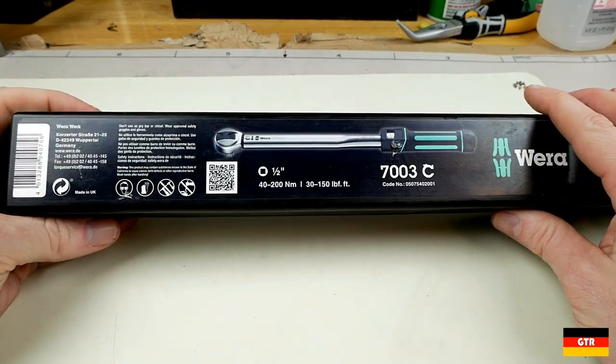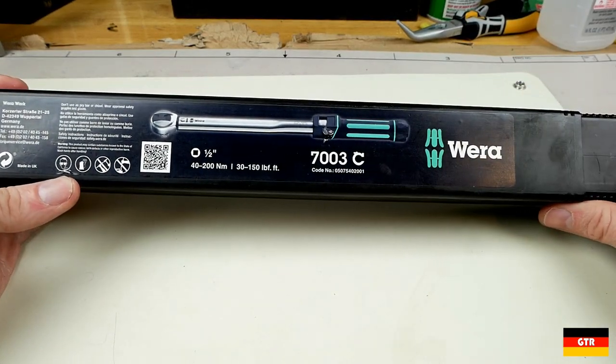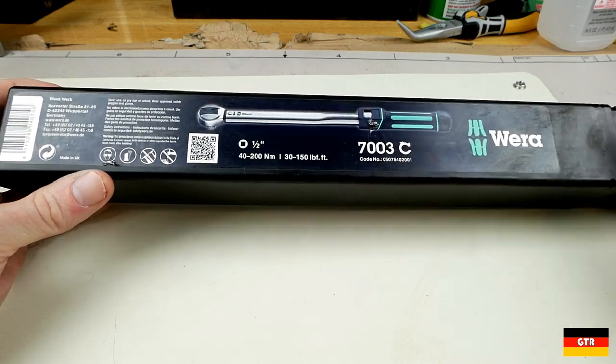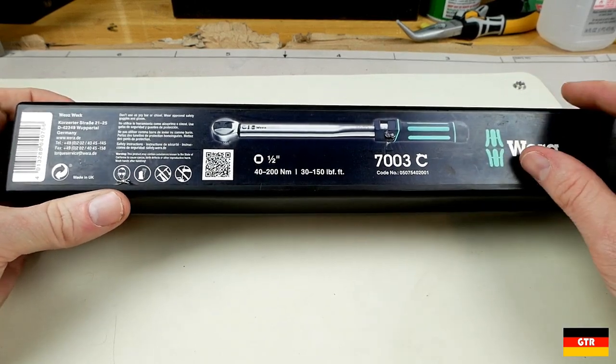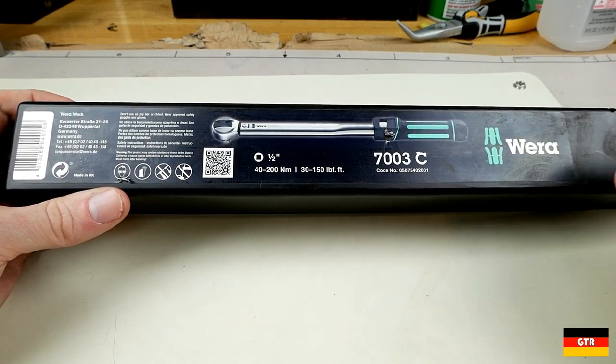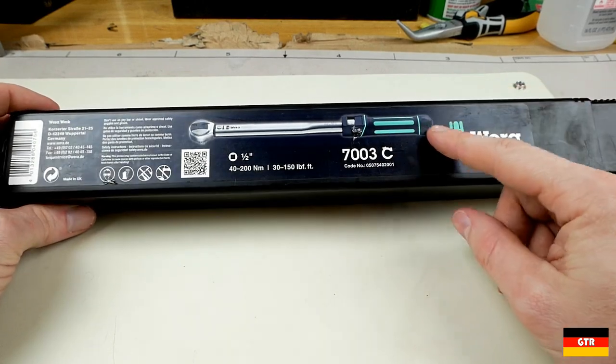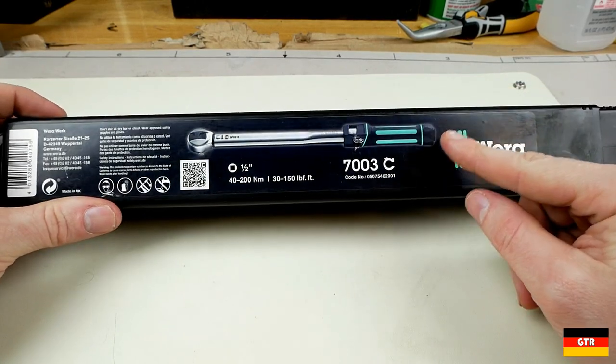So the first thing I want to talk about is this torque wrench. This is the Wera 7003C. This is a rebranded product that's actually made by Norbar Torque in the UK. Now this particular line of wrenches, it looks like it's been discontinued.